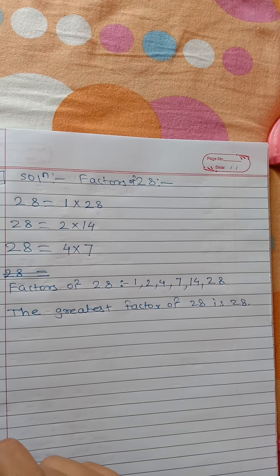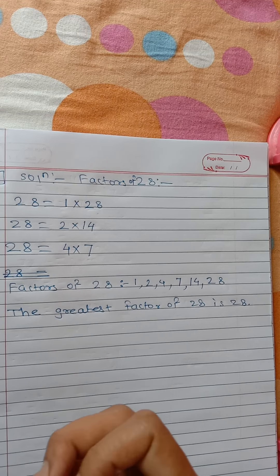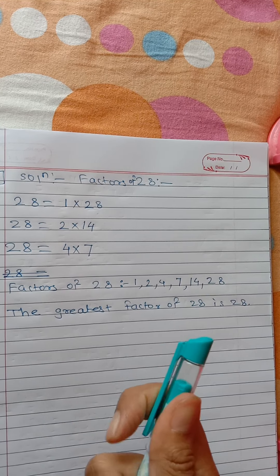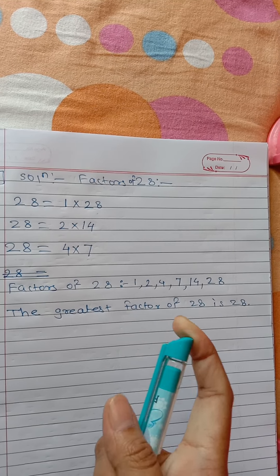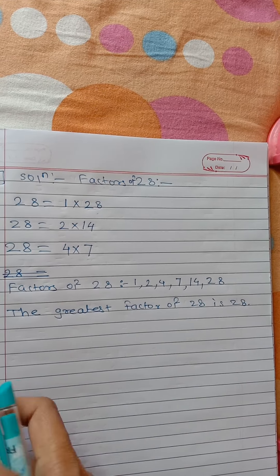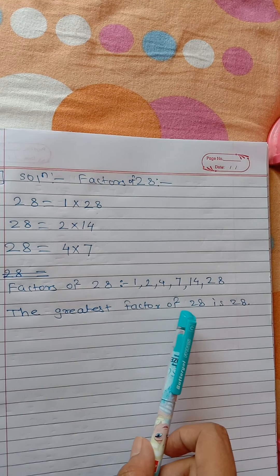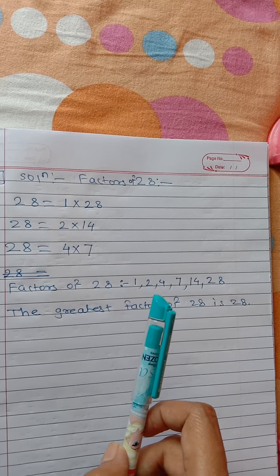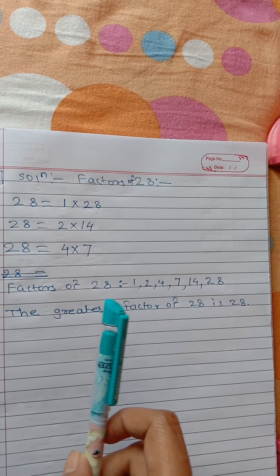What does this tell us? You can actually find this orally. I did the long process so you understand: the greatest factor of any number will be the same number itself. The greatest factor of 28 is 28. Take any number — 90, 200, 55 — its greatest factor will be that same number. The greatest factor of any given number will be the number itself.